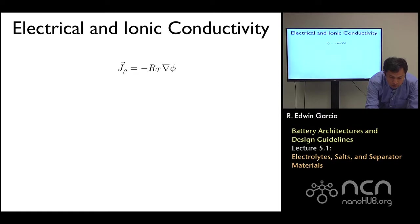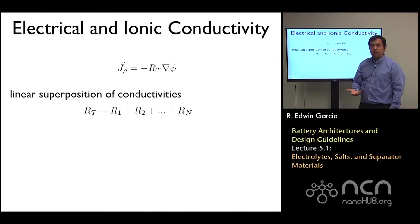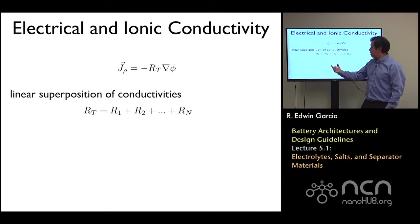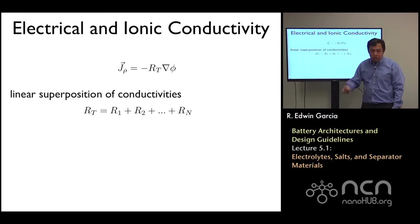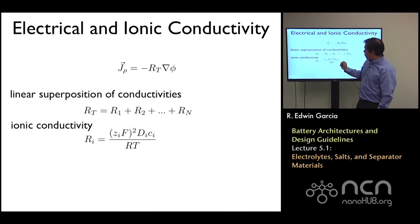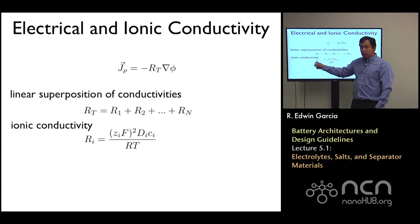Usually, these conductivities can be described in terms of the sum of the different contributions given all the species that account for the addition of the flux. So you can have here, for example, lithium ions, you can have electrons, and here you can have all the different species that contribute to that. Typically, the ionic conductivity is related to the diffusivity of the system through this relationship — this is the Nernst-Einstein relation. You can see that the larger the diffusivity of the ion as it's diffusing through the electrolyte, the larger the conductivity.